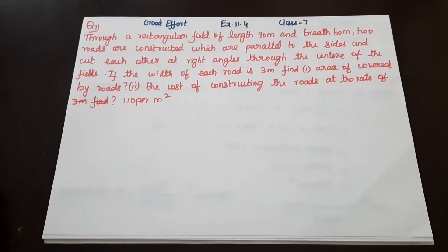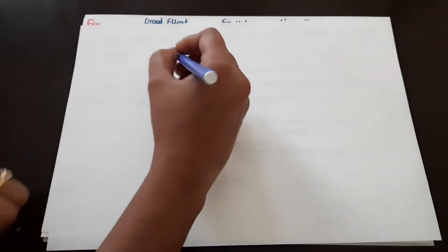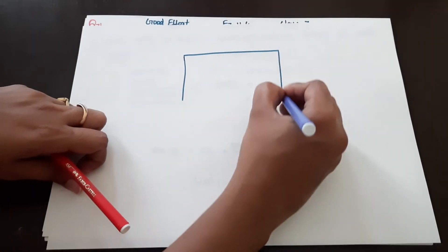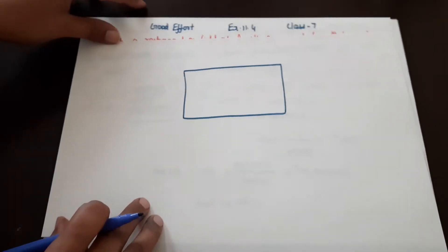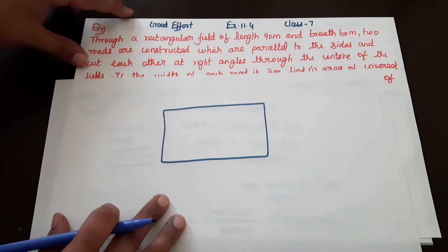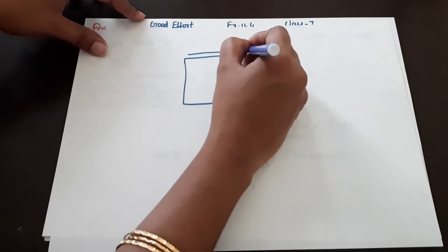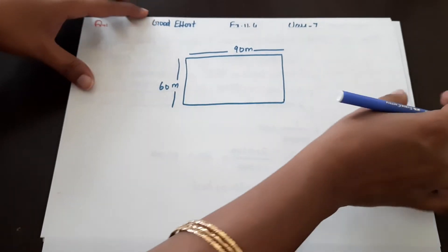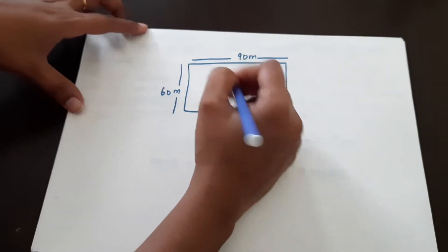So in the last problem, how do we look at it? The same thing is a rectangular field. We will draw a rectangular field. This length is 90 meter and 60 meter. So this is 90 meter. This is 60 meter. So now the right angles are cut. Two roads are cross.